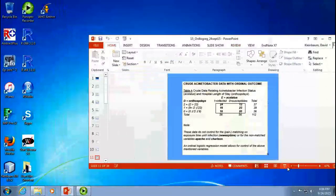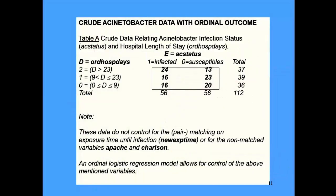Let's continue where we were on ordinal logistic regression. To remind you, for most of last class we talked about polytomous logistic regression. Both polytomous and ordinal logistic regression involve a logistic model where you're dealing with an outcome that has three or more categories. When you're dealing with polytomous logistic regression, the categories aren't ordered.